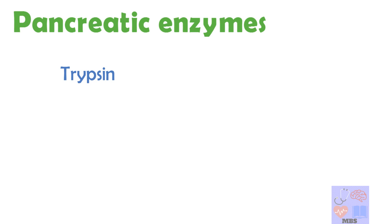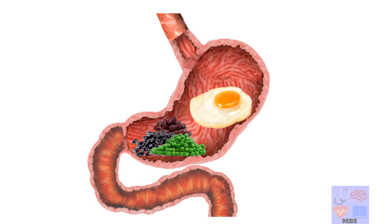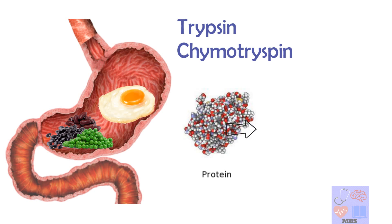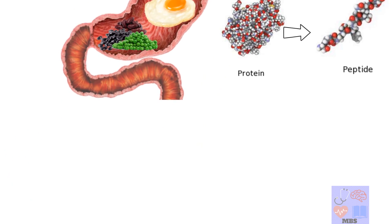Pancreatic juice is a mixture of multiple digestive enzymes and sodium bicarbonate. The most important enzymes are trypsin, chymotrypsin, and carboxypolypeptidase. Proteins in food are partially digested in the stomach. Trypsin and chymotrypsin then split these partially digested proteins into peptides of various sizes.